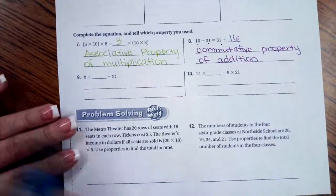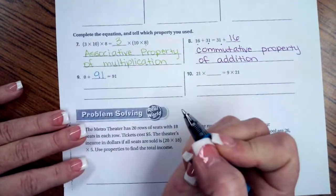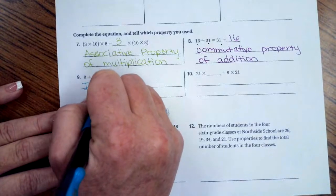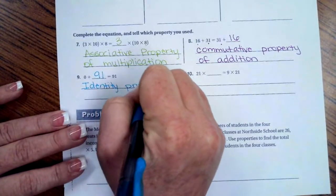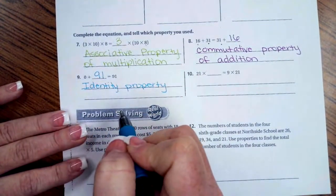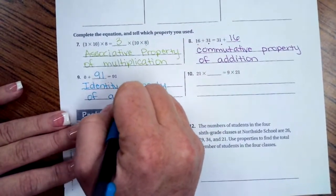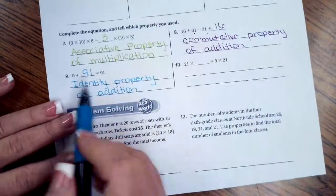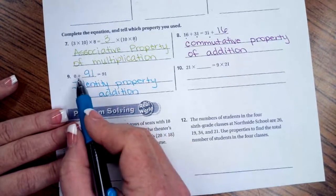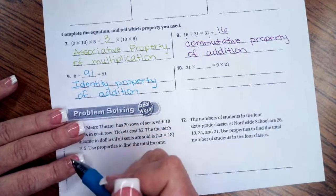So here's another property. Zero plus what equals 91? Well, that is 91. Zero plus 91 is 91. That is called the identity property, because the zero did not change the identity of the 91. And this is of addition. So when you're doing identity property, if it's of addition, it's going to be a plus zero. If it's of multiplication, it's going to be multiplied by one. If I had one times 91, that would still be 91, but it would be multiplying.